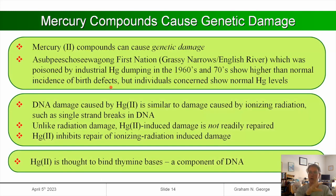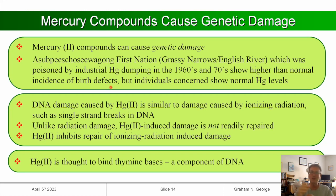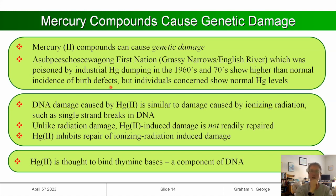Now I'll talk about how mercury causes genetic damage. It's been known for a long time that mercury compounds can cause genetic damage. The Grassy Narrows English River First Nations people who were exposed in the 1960s and 70s to considerable levels of mercury — including both organometallic and inorganic forms — have an anomalously high incidence of birth defects, despite the individuals with those birth defects showing normal mercury levels.